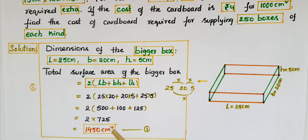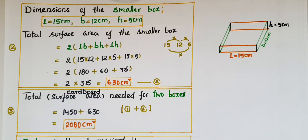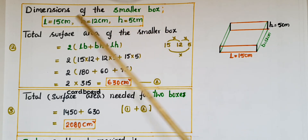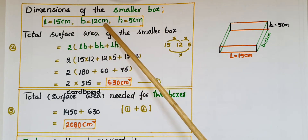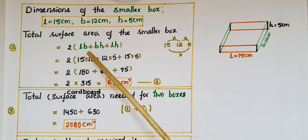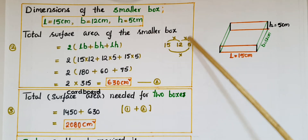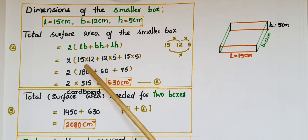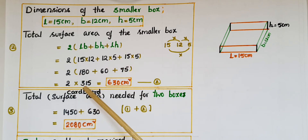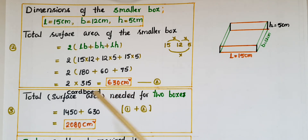Now we find the total surface area of the smaller box. The dimensions are l = 15 cm, b = 12 cm, h = 5 cm. Total surface area = 2(lb + bh + lh) = 2(15×12 + 12×5 + 15×5) = 2(180 + 60 + 75) = 2 × 315 = 630 cm². This is the second equation.